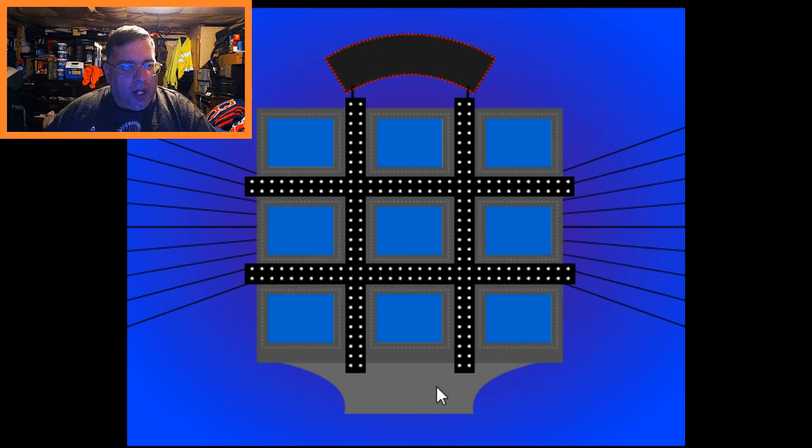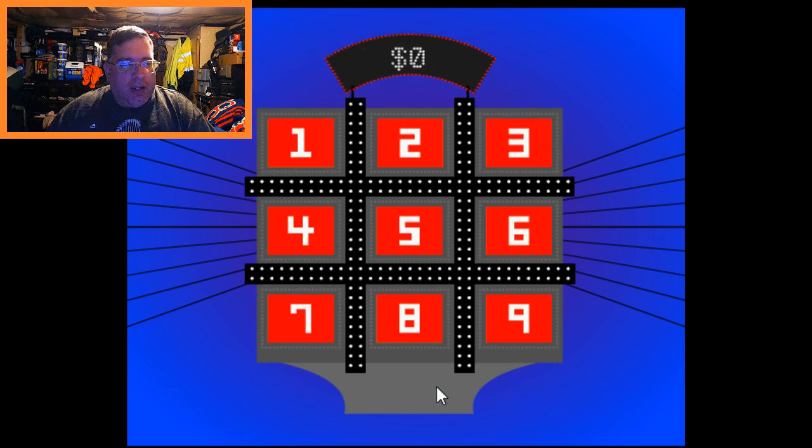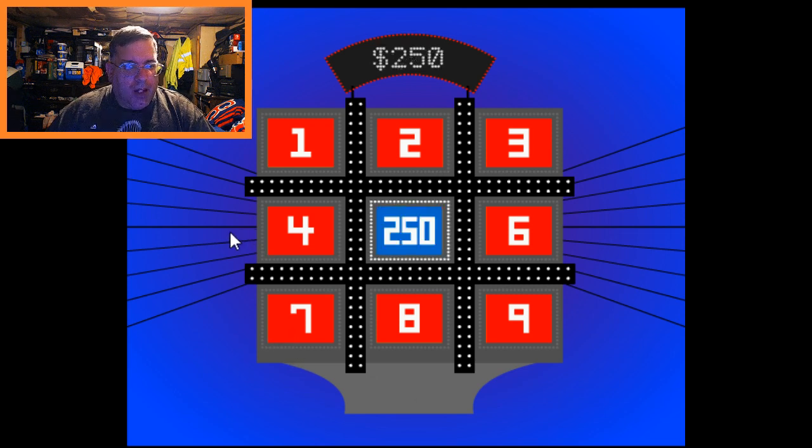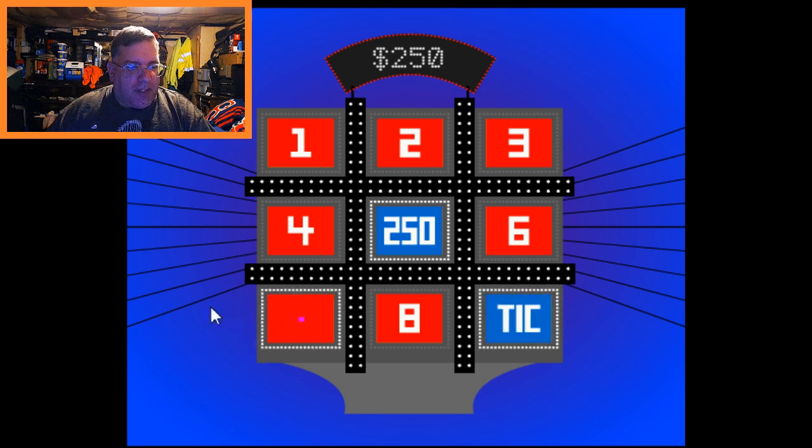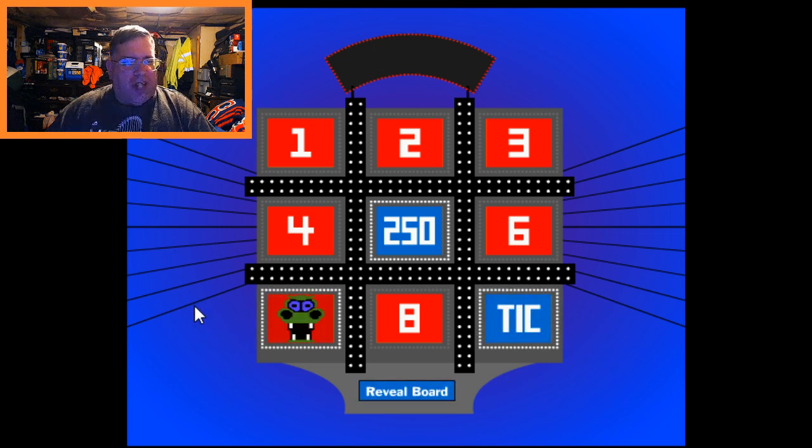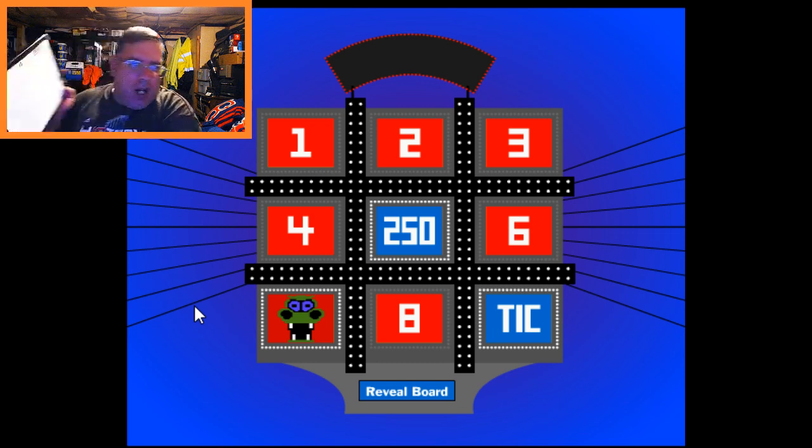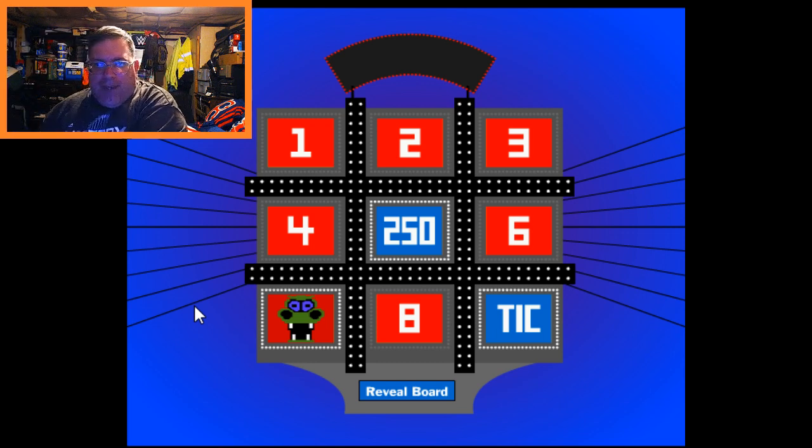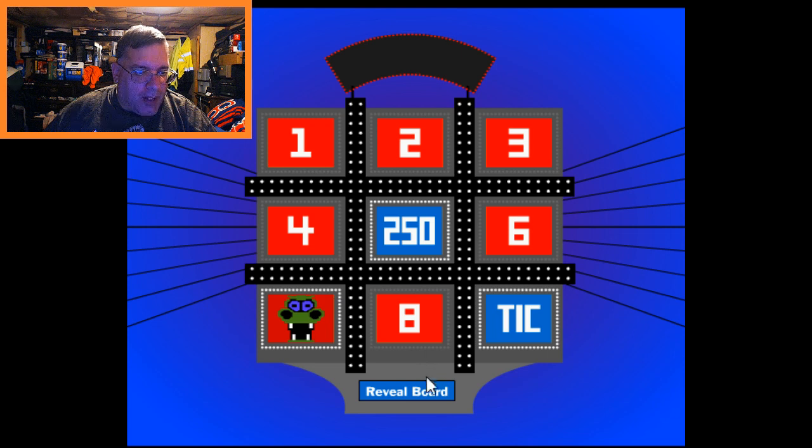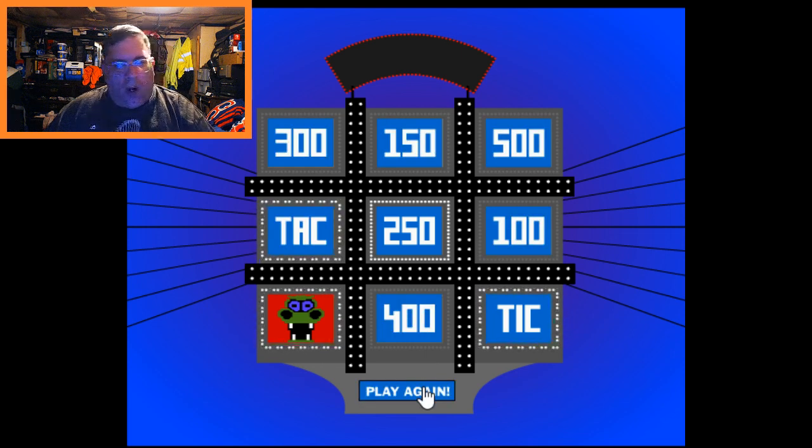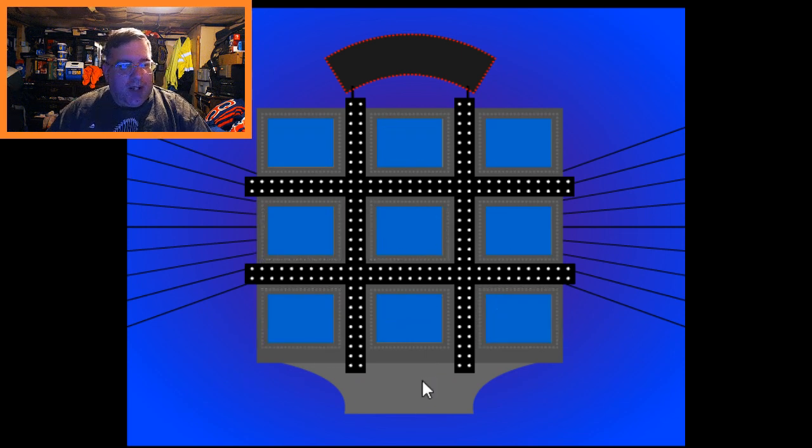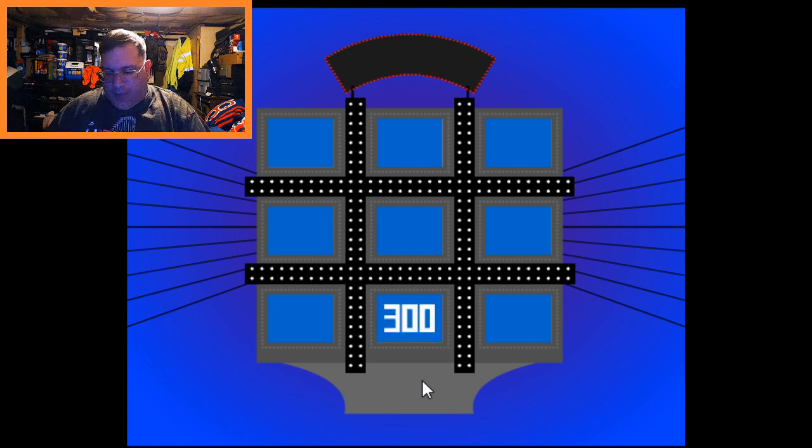Game number two. Here we go. Dragons found a place to hide. Let's go find, let's go see number five. 250. Let's go to number nine. A tick. Let's go to see number seven. Oh, Sackboy was there again. Sackboy got me. That's right. It's one up. It's a Super Mario game. Let's find out where that tick was. Ah, number four. Gosh darn it.